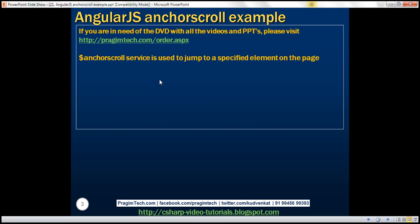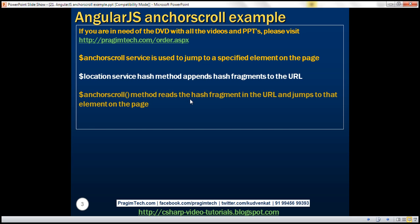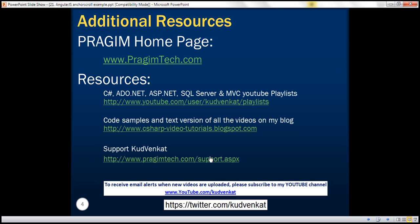The Anchor Scroll service is used to jump to a specified element on the page. The location service hash method appends hash fragments to the URL. The anchor scroll method then reads the hash fragment from the URL and jumps to that element on the page. The yOffset property specifies the vertical scroll offset. Thank you for listening and have a great day.